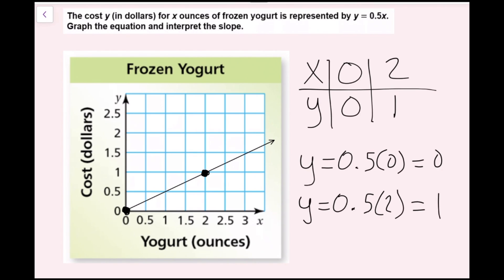Now that we've graphed our equation successfully, the next step is to interpret the slope. Interpret means explain what the slope means in the context of the problem. There are actually multiple ways we can figure out the slope. We can always look at the graph and do our rise over run.